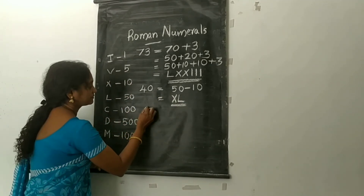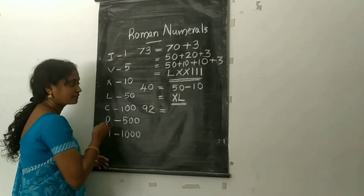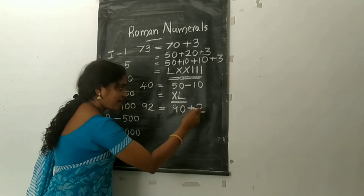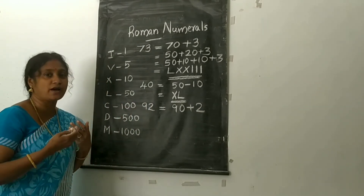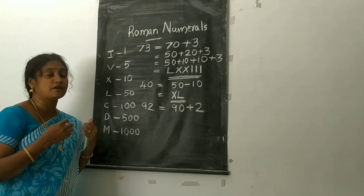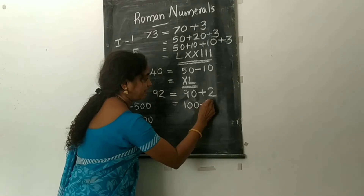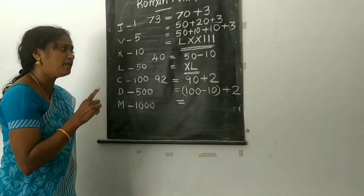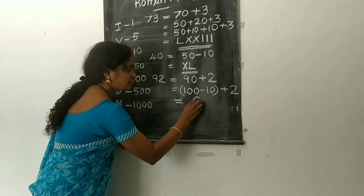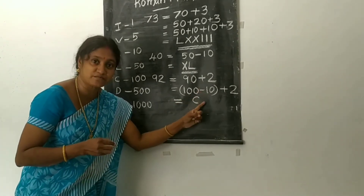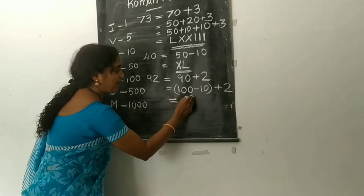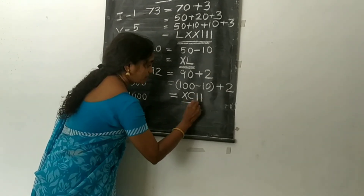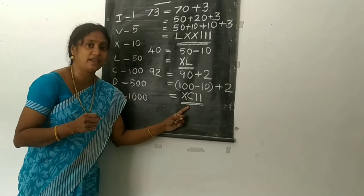The third problem: 92. We write 92 as 90 plus 2. There is no symbol for 90, and 90 is close to 100, so 90 equals 100 minus 10. Since it is subtraction, X is written on the left side of C, giving XC. And 2 is II. Therefore, 92 is written as XCII.